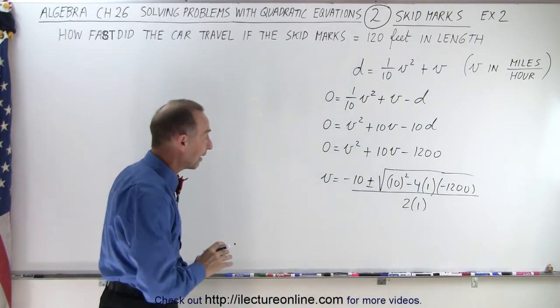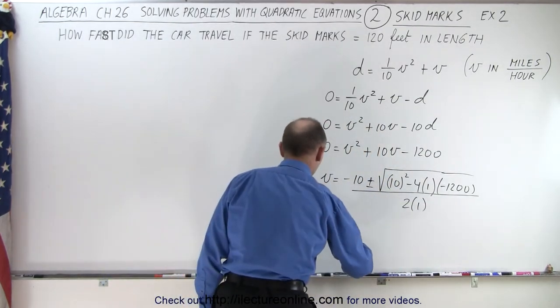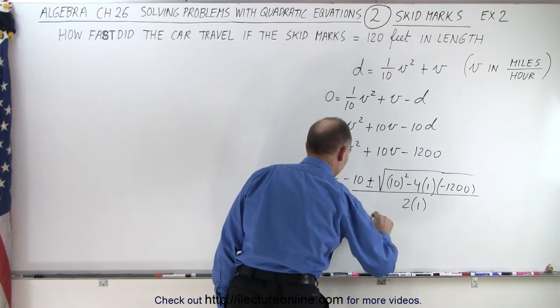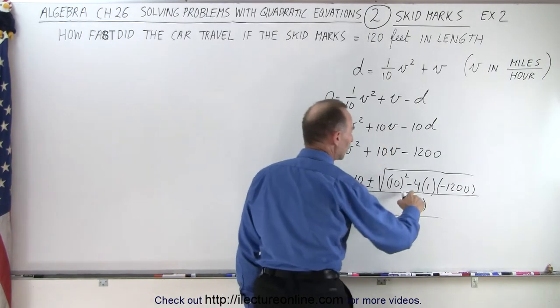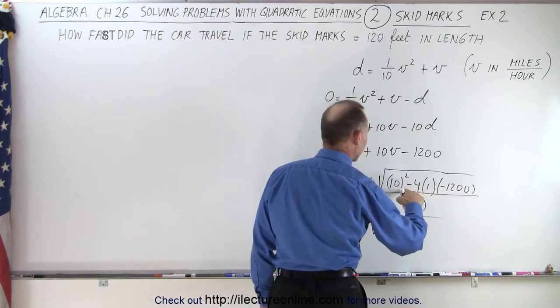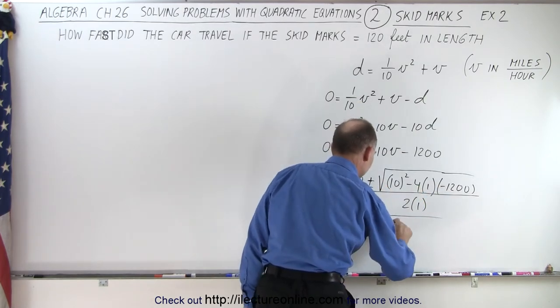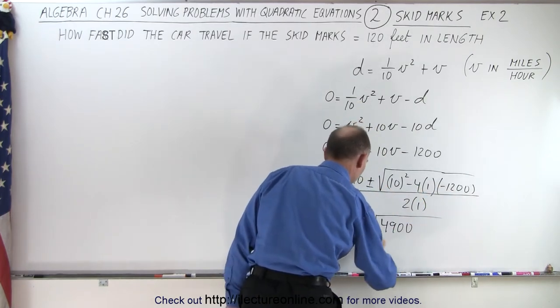So let's see what kind of values we get for this. So v is equal to -10 plus or minus the square root of that would be 4800 plus 10 that would be 4900. And the whole thing divided by 2.